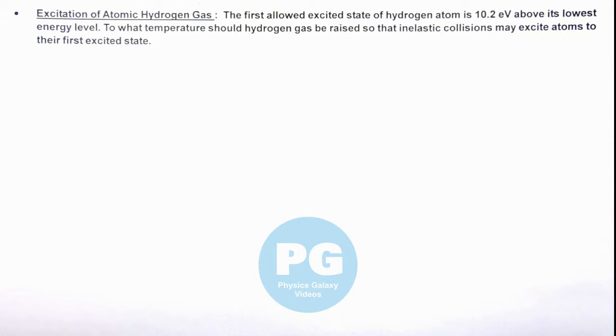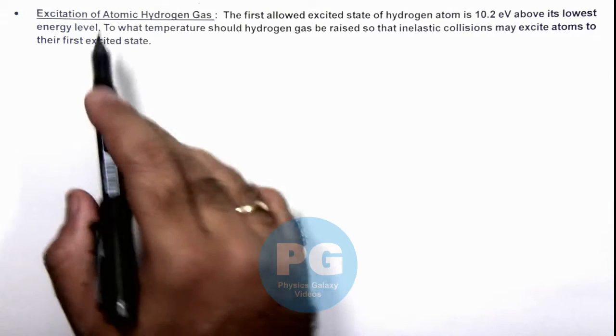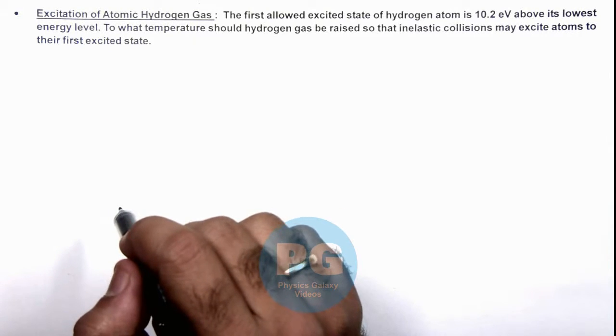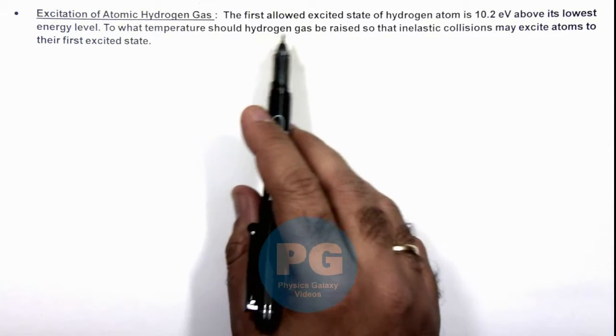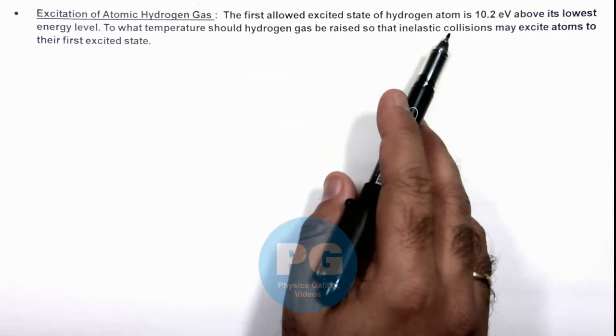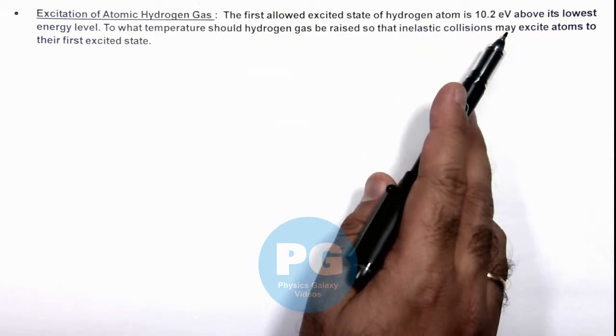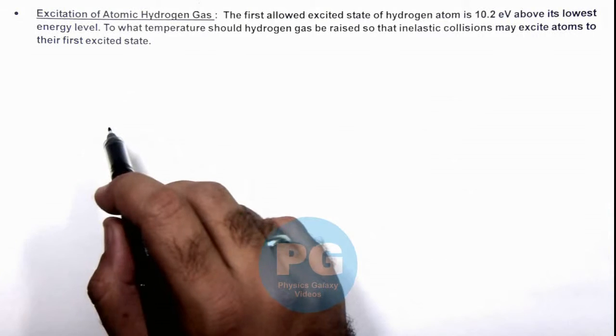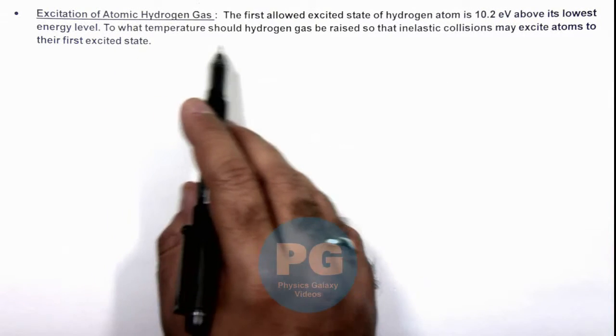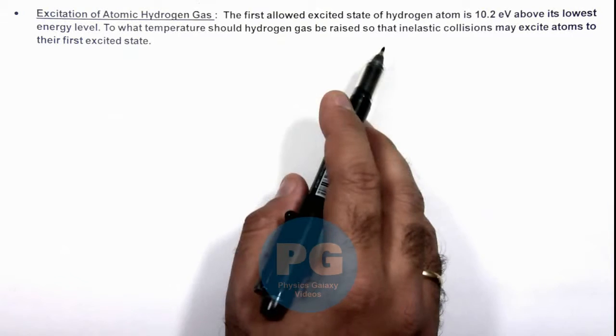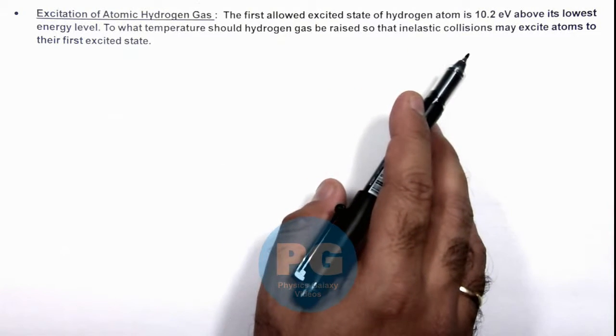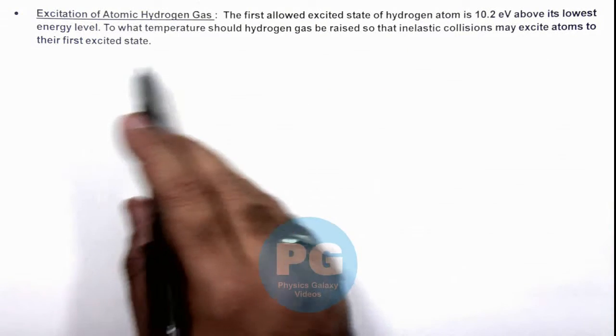In this illustration we'll discuss excitation of atomic hydrogen gas. The first allowed excited level of hydrogen atom is 10.2 electron volts above its lowest energy level. To what temperature should hydrogen gas be raised so that inelastic collisions may excite atoms to their first excited state?